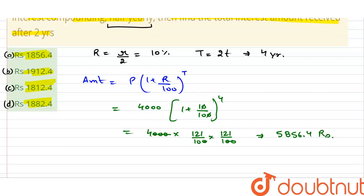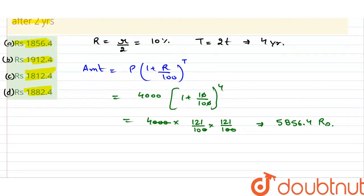अब हमसे question में simply क्या पूछा है, compound interest. तो compound interest क्या हो जाएगा, amount minus principle. तो amount कितना है, 5,856.4 minus 4000, तो यह कितना हो जाएगा, 1,856.4 rupees. तो यह हमारे क्या होगे, compound interest, so option A is correct.